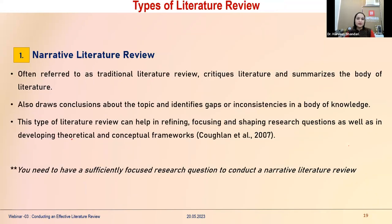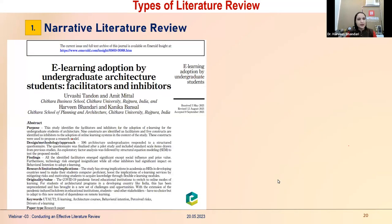The first type of literature review is the narrative literature review, often called the traditional literature review. In this approach, you critique and summarize the body of literature, draw conclusions, identify research gaps and inconsistencies in existing knowledge, and show how the new research will refine it — shaping further research questions and developing theoretical or conceptual frameworks not previously considered. A narrative literature review requires a sufficiently focused, specific research question.